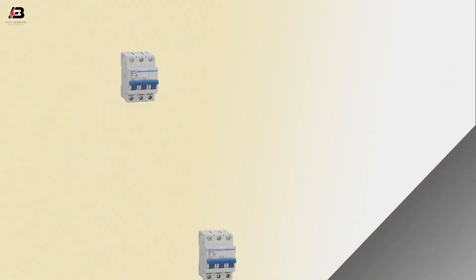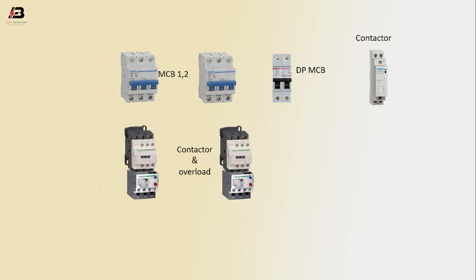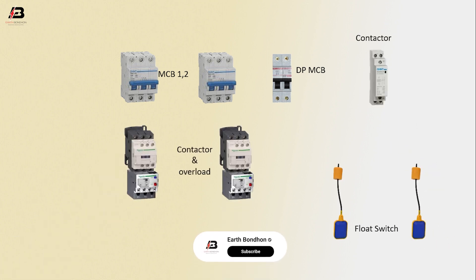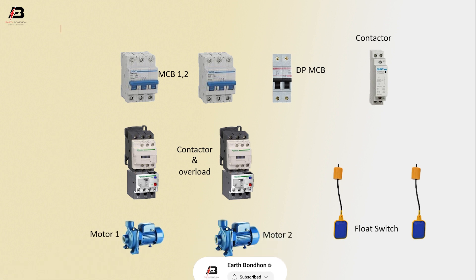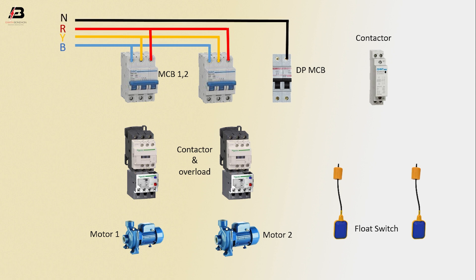So viewers, let's start. Components include MCB 1 and 2, DP MCB, contactor magnetic conductor, and overload 1 and 2, prop switch 1 and 2, motor 1 and motor 2. First phase connection input to MCB1 and MCB2, second phase connection input to DP MCB 1 and 2, third phase connection input to MCB1 and MCB2, neutral connection input to DP MCB.